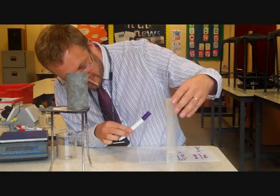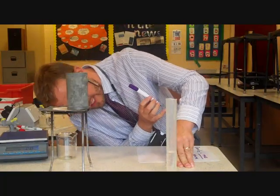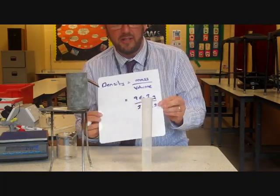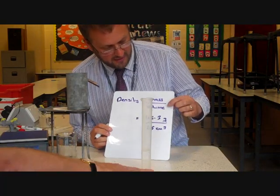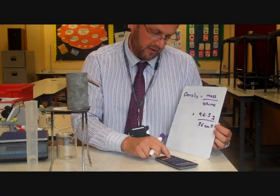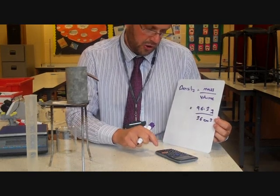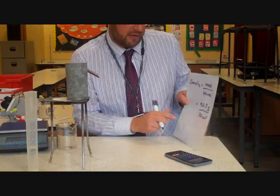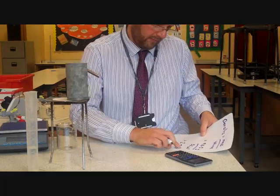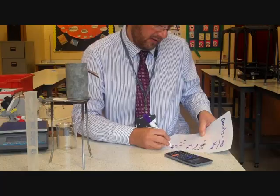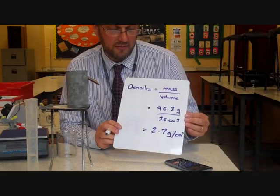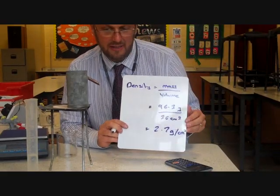Using the appropriate cylinder and taking a careful reading, I'll start at 36 — so we've got 36 centimetres cubed. Our density is mass divided by volume: 96.3 divided by 36 equals 2.7 grams per centimetre cubed. So very different from the previous method in terms of how we measured the volume, but in terms of the calculation it's exactly the same.